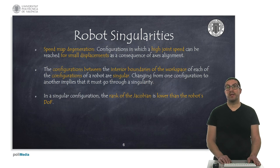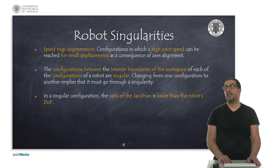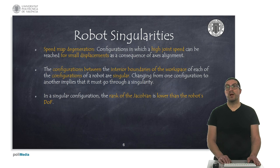Robots can have some singularities. These configurations must be known in advance so we have to try to avoid them as much as possible, since they imply that the robot will be blocked in some directions. Singularities appear when we try to move the robot in the Cartesian space and the inverse kinematic calculation fails. Singular configurations can cause a speed map degeneration — that is, they cause high joint velocities for small end-effector displacements.